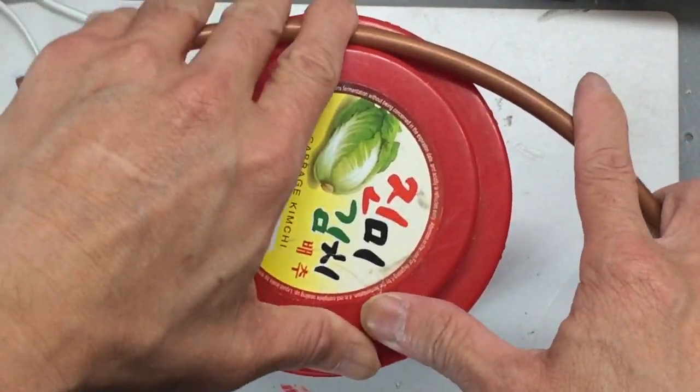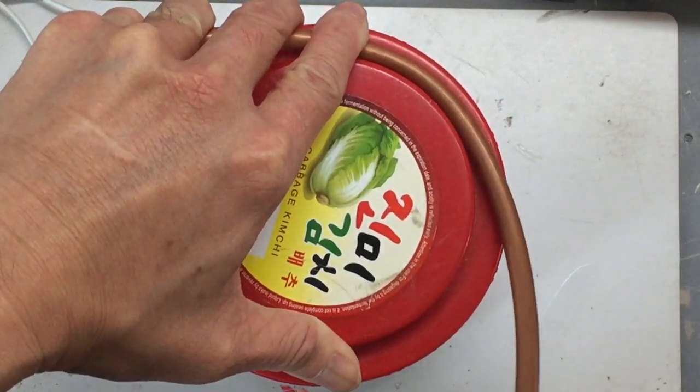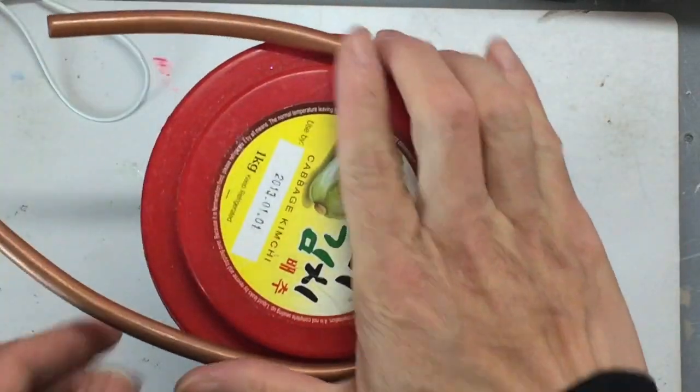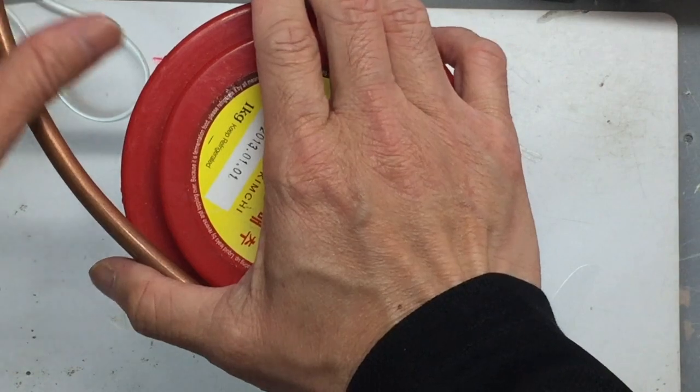When you bend it, don't push so quickly. Push gently, otherwise it may create wrinkles that are hard to fix. This is a soft copper pipe so you can bend it quite easily.